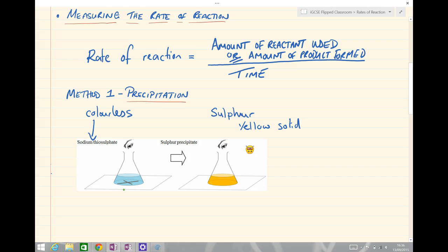As you mix the two things together, if you put something underneath the solution such as a black cross and observe by looking down through the solution, if you wait for a given time, at some point the yellow solid sulfur forms and you will no longer be able to see the black cross. At that point you can stop the stopwatch and compare different rates of reaction.